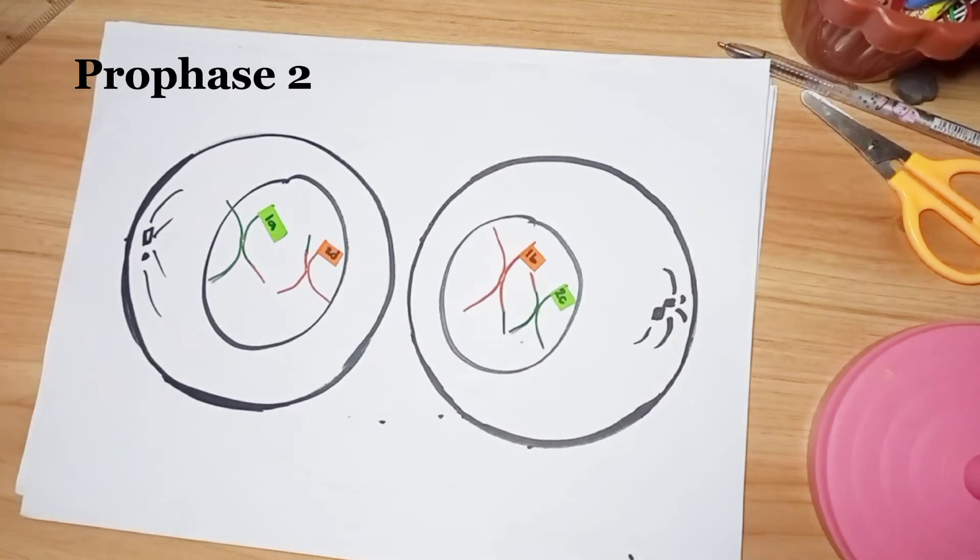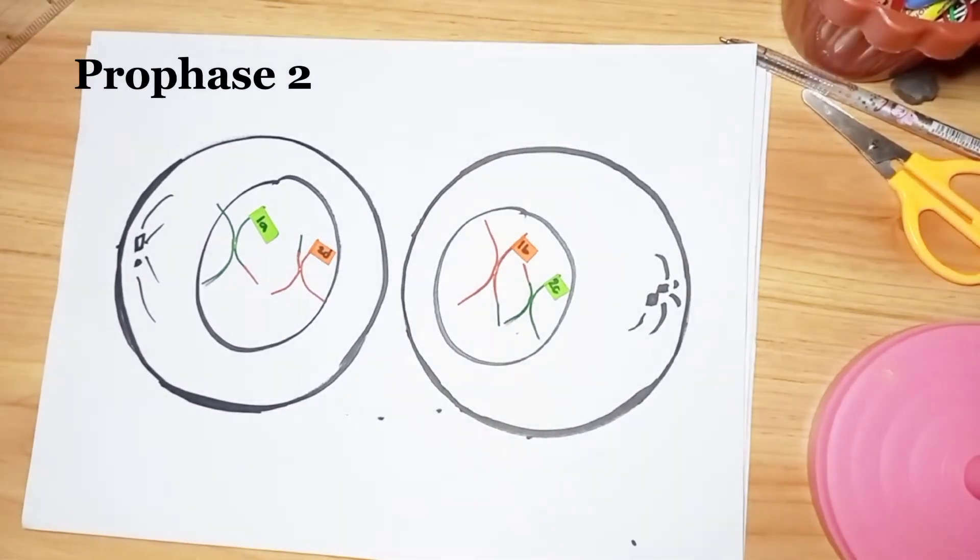During prophase II, chromosomes condense and the nuclear envelope breaks down, if needed. The two sister chromatids of each chromosome are captured by microtubules from opposite spindle poles.